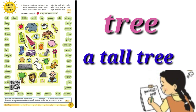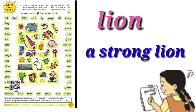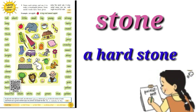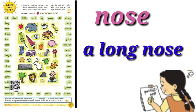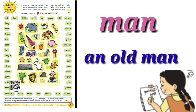Tree — a tall tree. Lion — a strong lion. Stone — a hard stone. Nose — a long nose. Man — an old man.